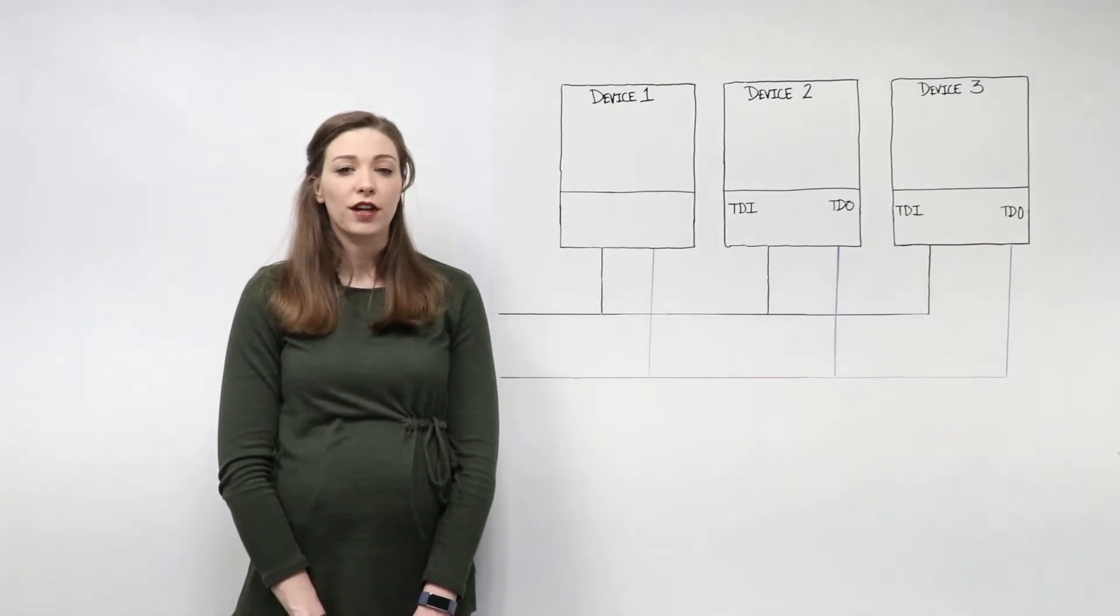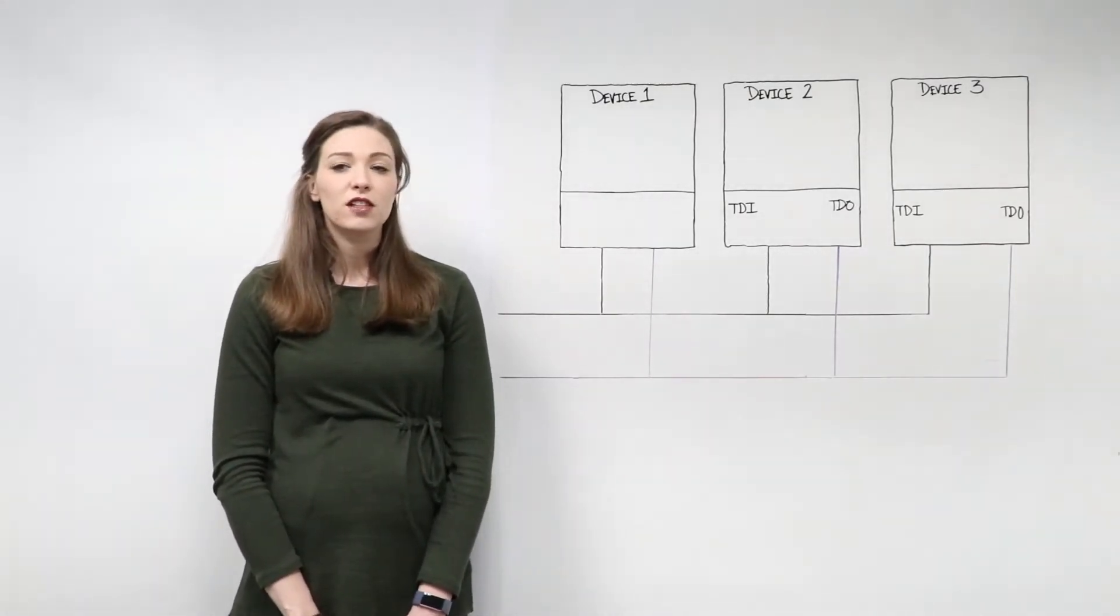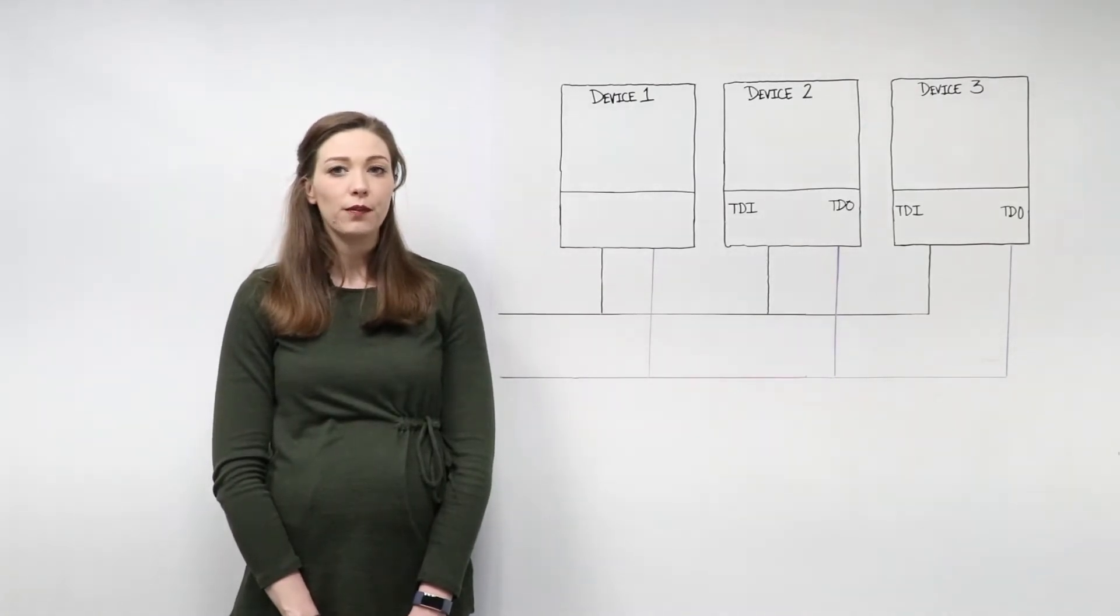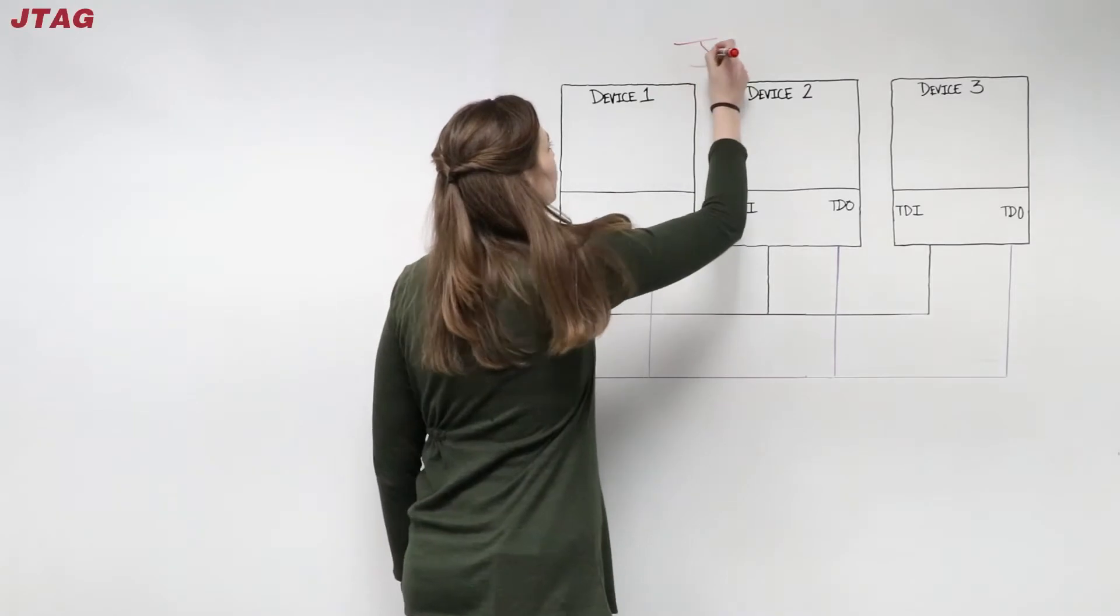Fine pitch components and ball grid arrays, often used to create more space on the board, have depleted physical access to signals. In this situation, there is another option which can help: JTAG.